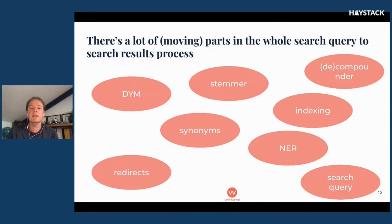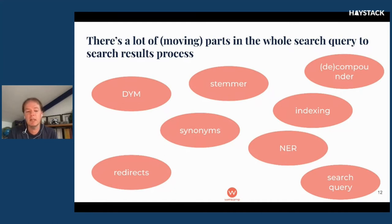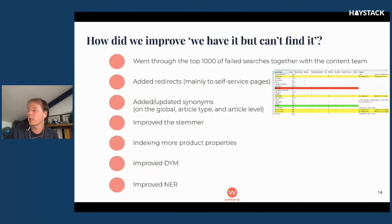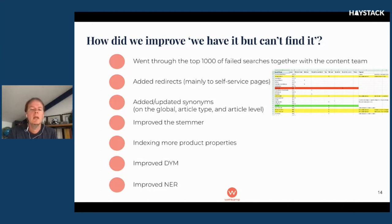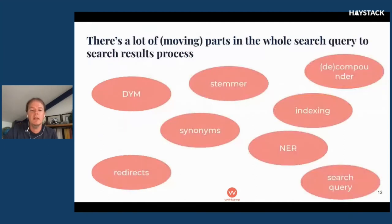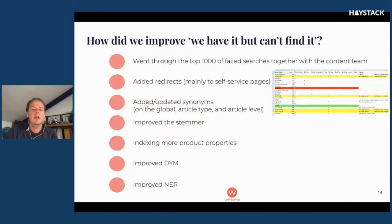There are a lot of moving parts in the search query before you get to the search results. There's a stemmer, there's a decompounder, we have synonyms, we are indexing products, we have a named entity recognition, and we have redirects in place to certain pages. So where to start? What we did was we took the top thousand failed searches from the previous three months and sat down with the content team and really went line by line — what is the reason that this turned up with no search results? And basically we improved all of these different moving parts a little bit.